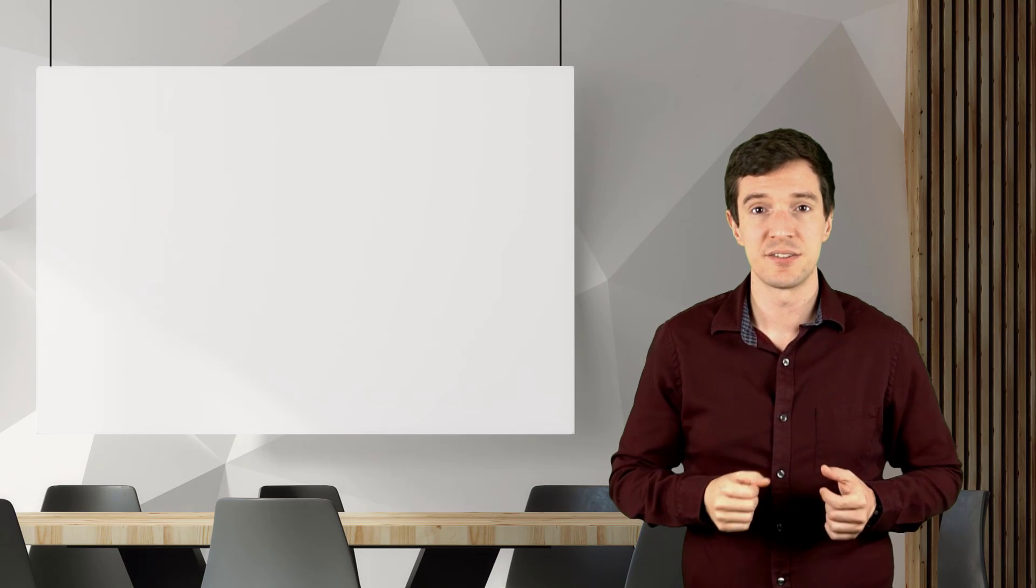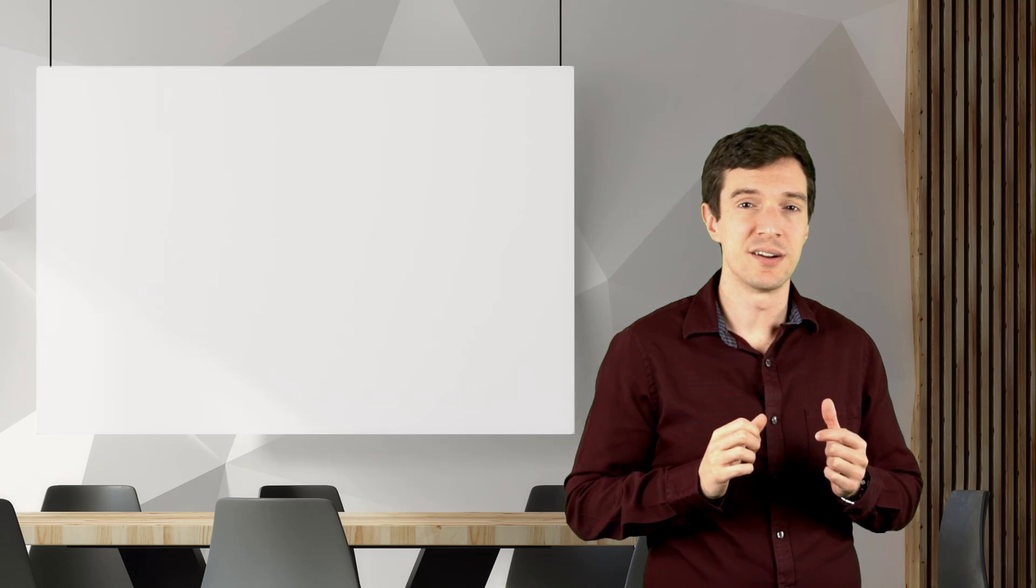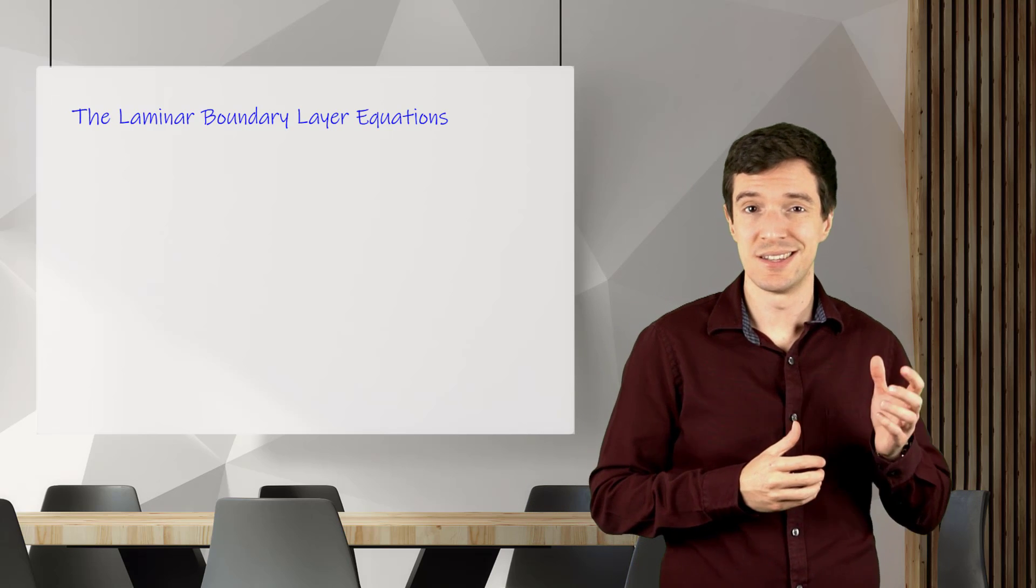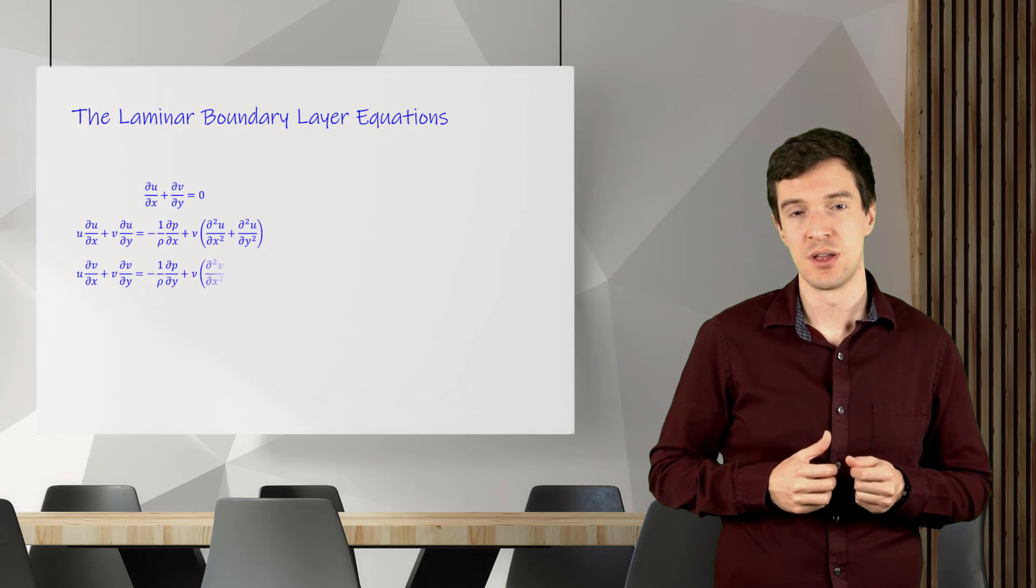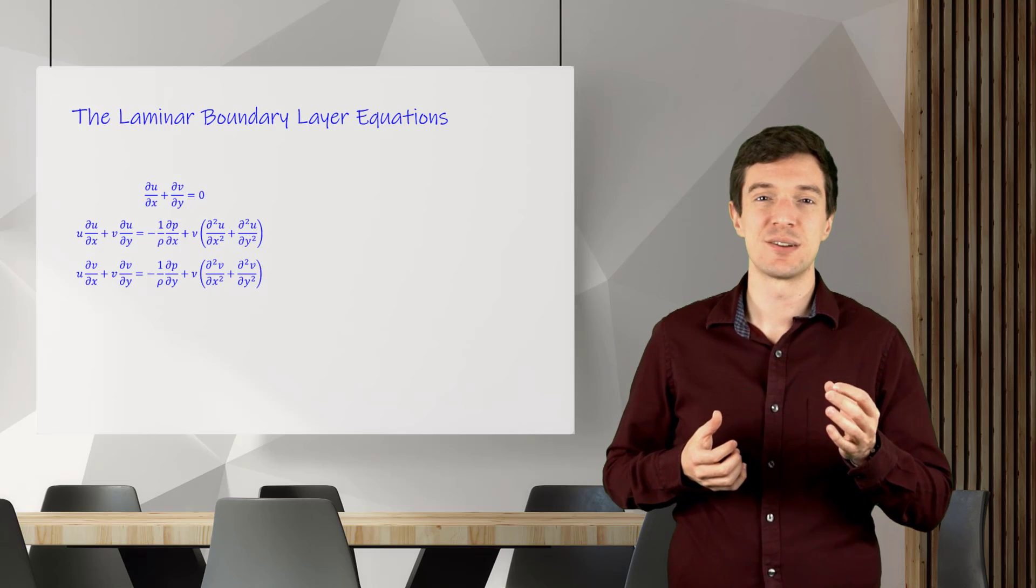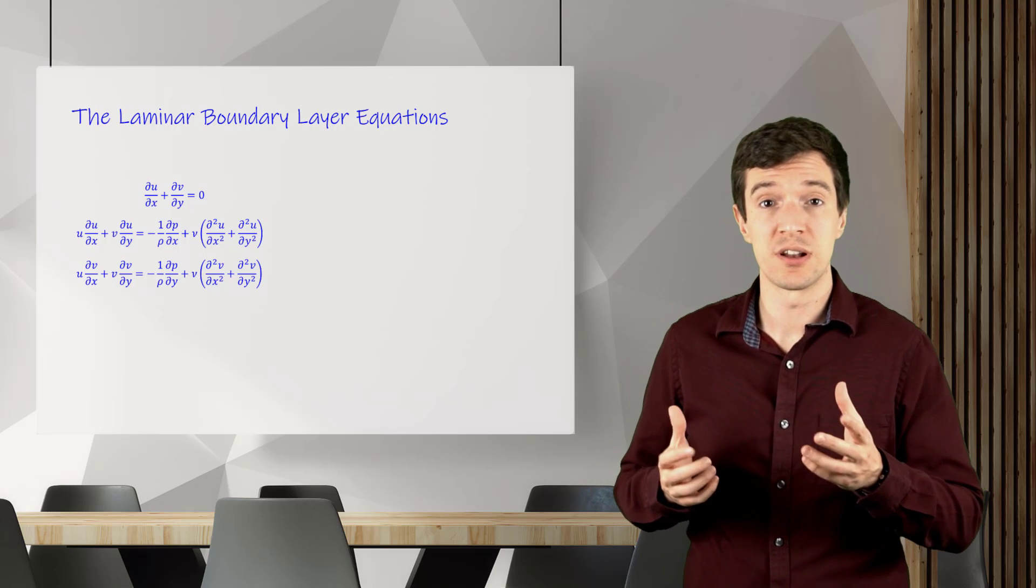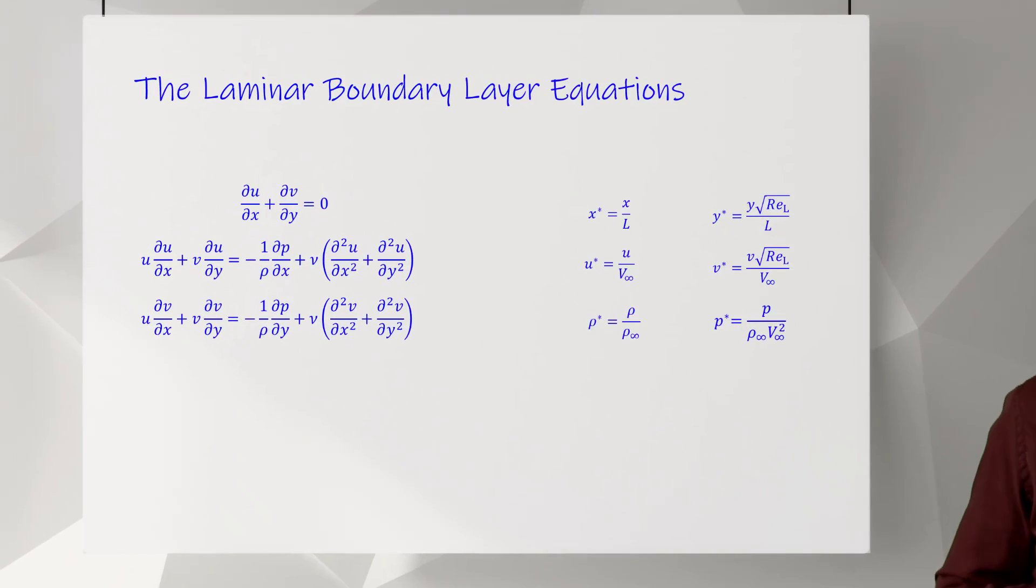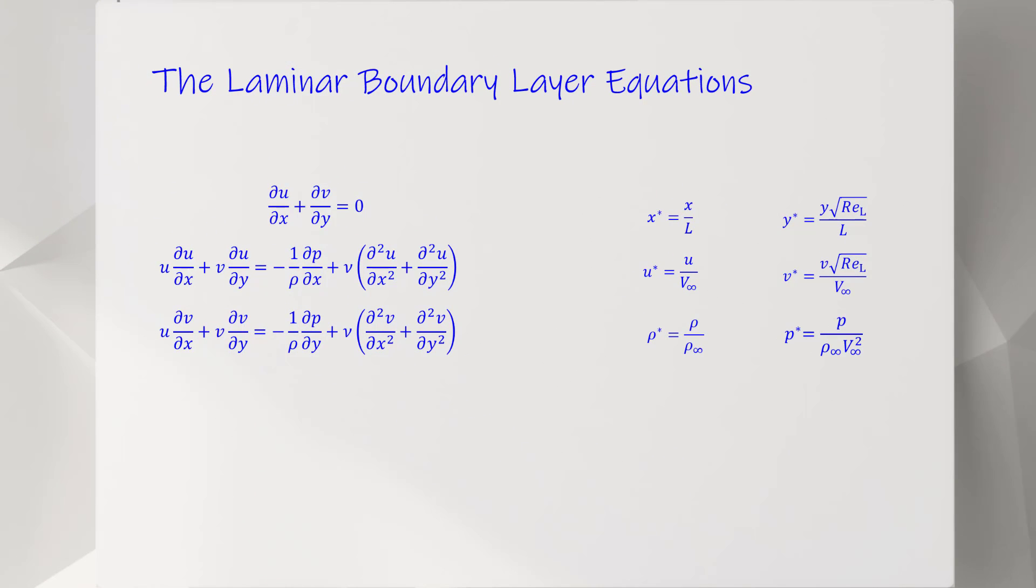Let's start deriving the laminar boundary layer equations. Let's recall here the continuity equation and the momentum equations in the x and y directions. We can recast these equations into their non-dimensional forms, substituting the variables with non-dimensional ones. The non-dimensional parameters are simply derived by dividing the dimensional variables by reference values, such as length or velocity.